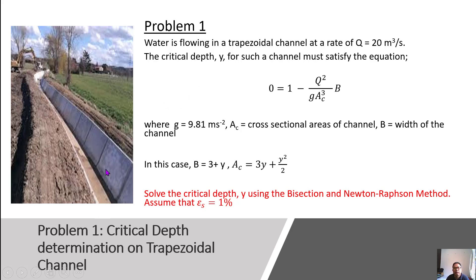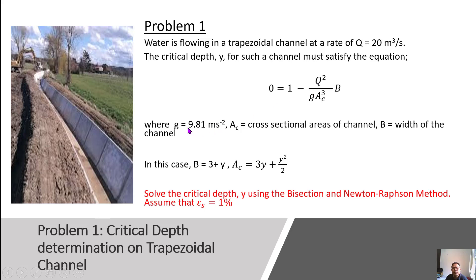In this trapezoidal channel, the water is flowing through the channel at a flow rate Q of 20 cubic meters per second. There is a formula that has been set up: f equals 1 minus Q squared divided by gravity multiplied by the cross-section cubed and multiplied by the width of the channel. This is the equation you will use to solve the problem.